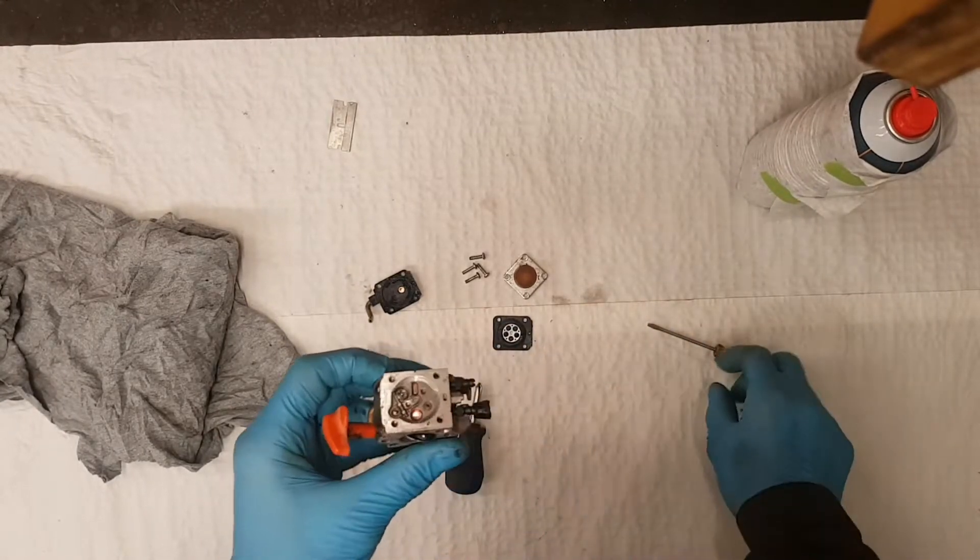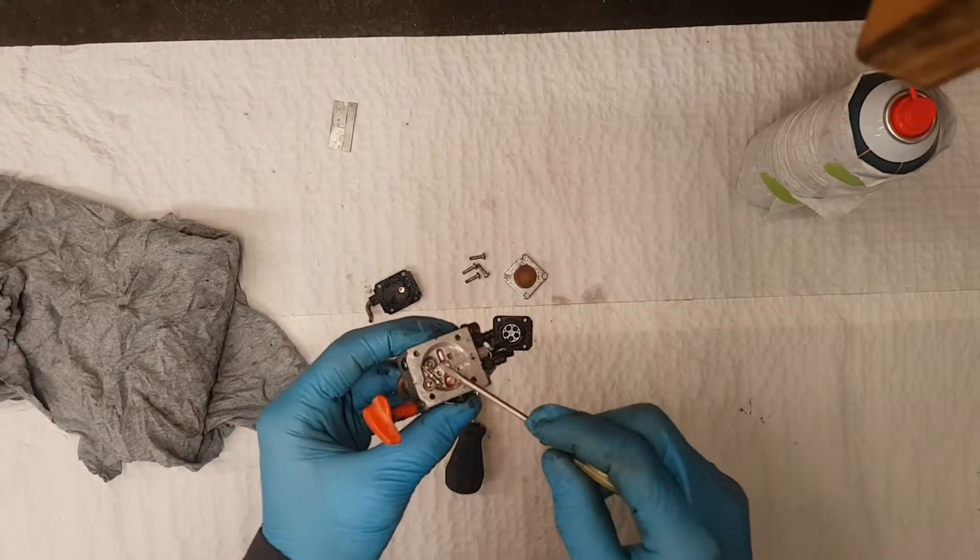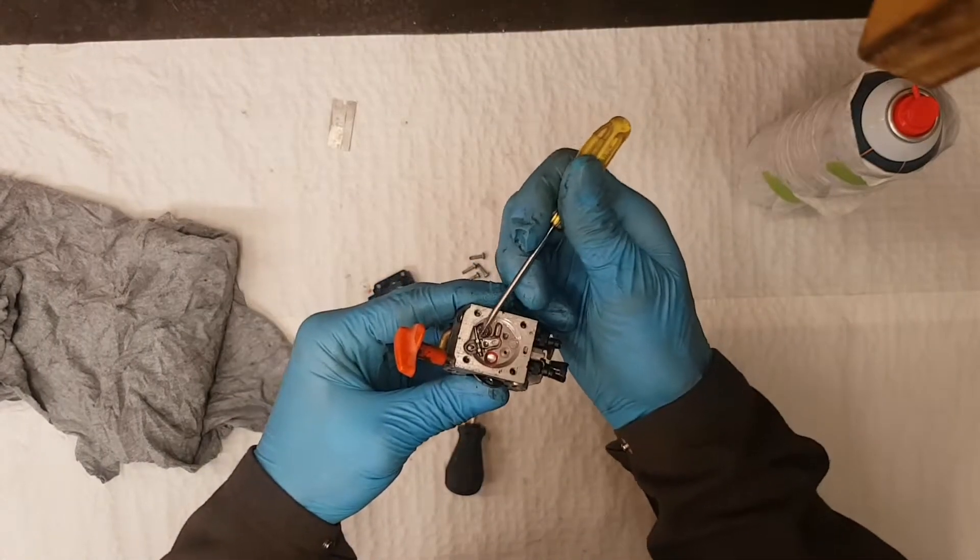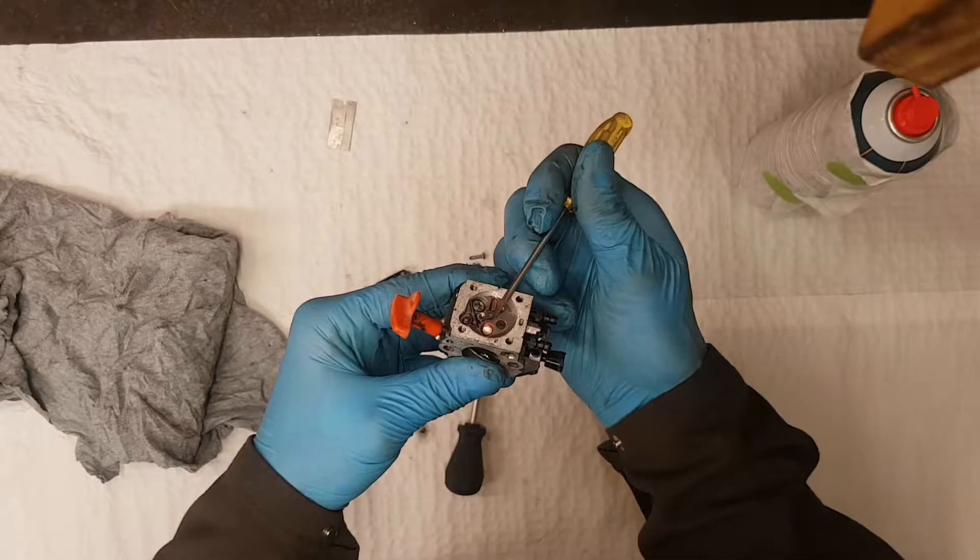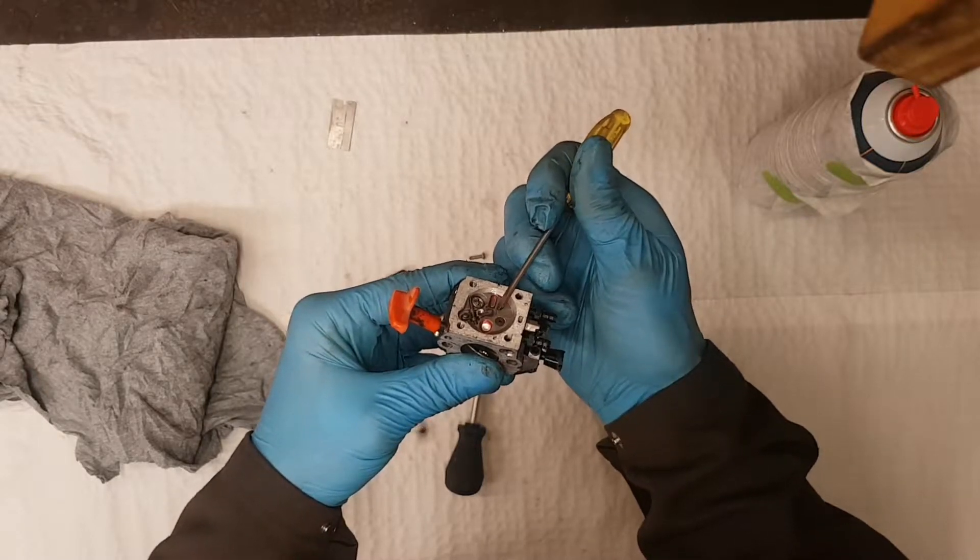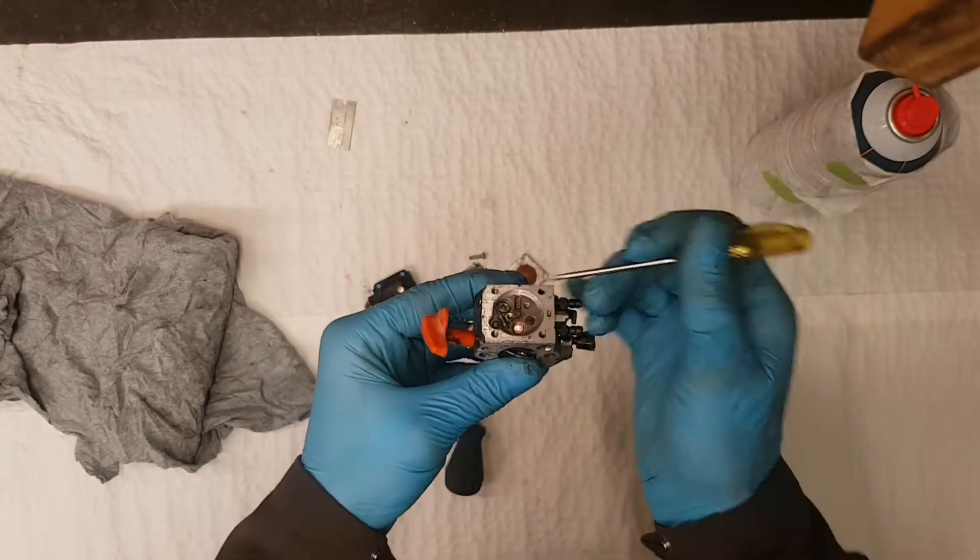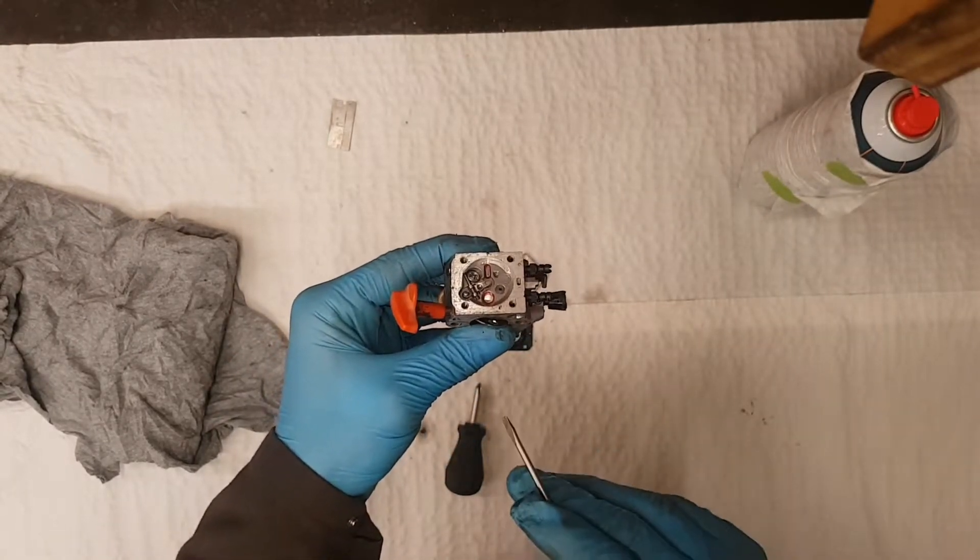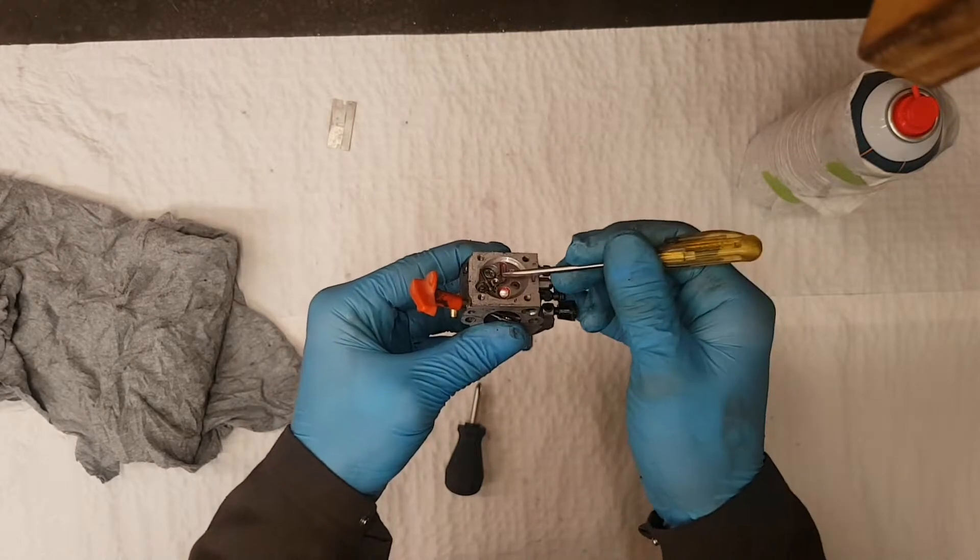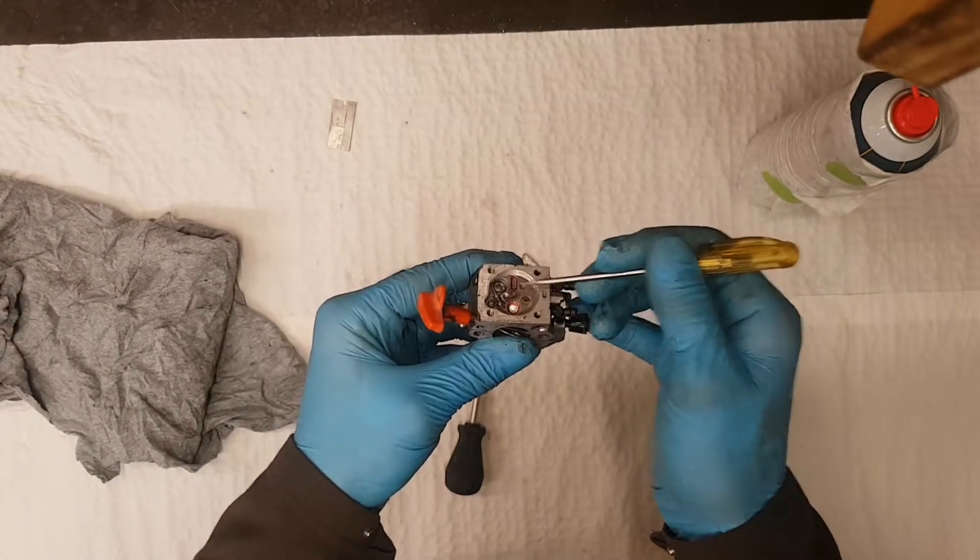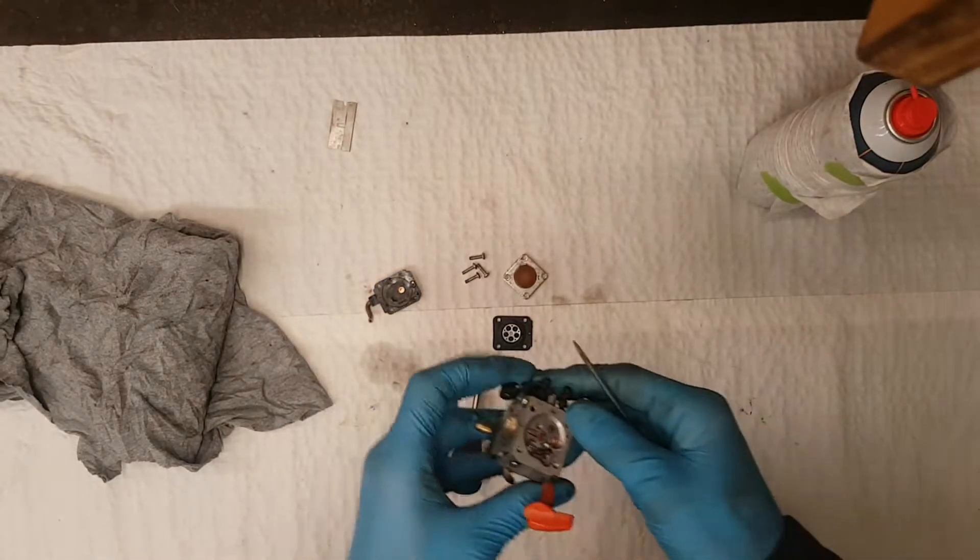What that does is it gives you your air gap for your needle and seat. So this is your needle right in here, and then this is going to be your little spring setup. What this does is as your airflow coming through, every pulsation of the piston makes it flutter and it allows a little bit of fuel coming in like this.